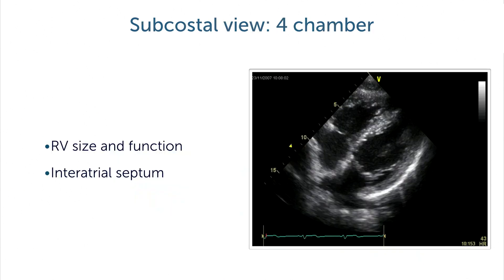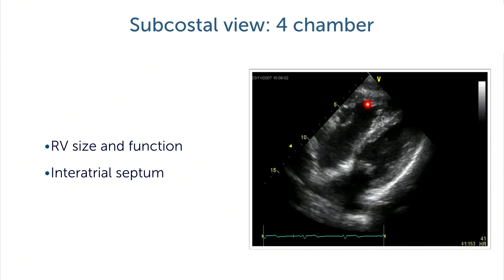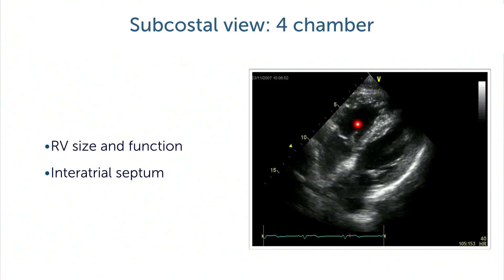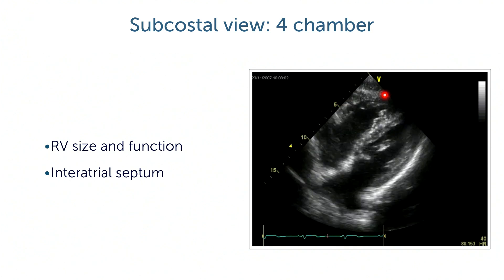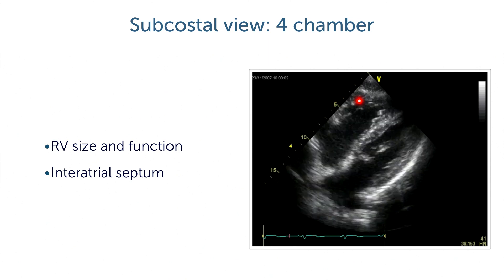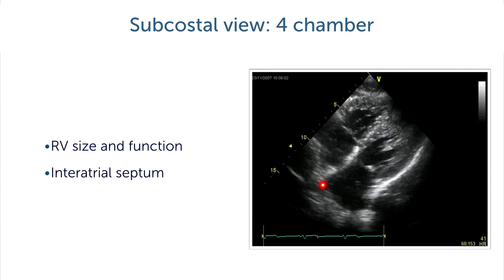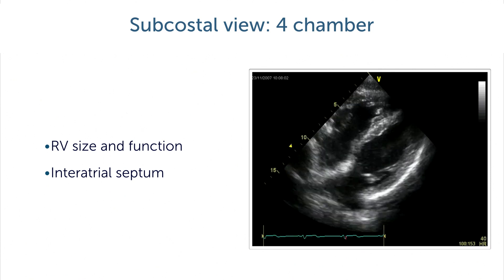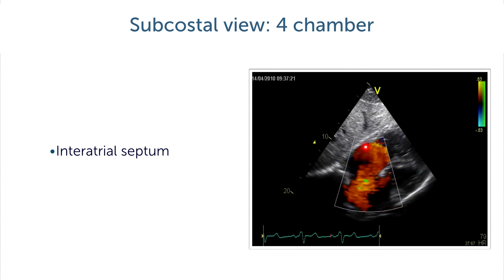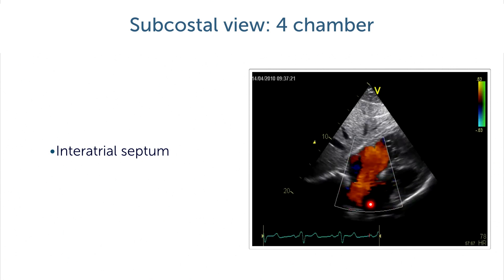Looking at the different pathologies we can assess with the subcostal view: the right ventricle, where we look at size, function, and thickness of the free wall. The subcostal view is one of the best views to assess right ventricular hypertrophy. Here you can see some degree of RVH present in this patient. Regarding the interatrial septum, with a very parallel orientation, here is the corresponding color Doppler of a patient with an atrial septal defect, showing flow from the left atrium directly into the right atrium.